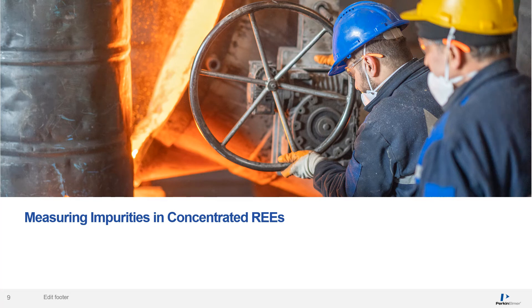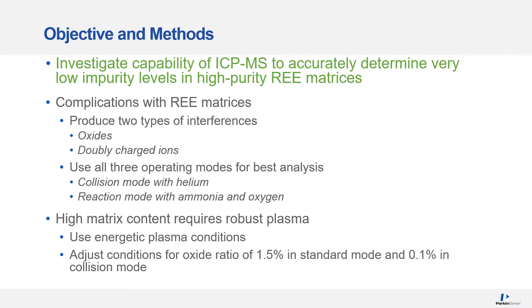Now we're going to talk about how to measure impurities in concentrated rare earth elements. The objective of this investigation was to measure the capability of the ICP-MS to accurately determine very low impurity levels in high purity rare earth element matrices. The complications are that rare earth element matrices produce oxides and double charges very easily. We're going to use all three modes of operation: standard, collision mode with helium, and reaction mode with ammonia and oxygen. The high matrix content requires a robust plasma with energetic plasma conditions and oxide ratios adjusted to 1.5% in standard mode and 0.1% in collision mode.